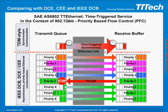Time-triggered streams cannot be influenced by network peak loads, so they behave like pseudo-wire or circuit-switched communication. Time-triggered communication emulates circuit switching and is lossless and free from latency jitter and congestion by design. This allows reliable, jitterless, and minimized latency in multi-hop networks.